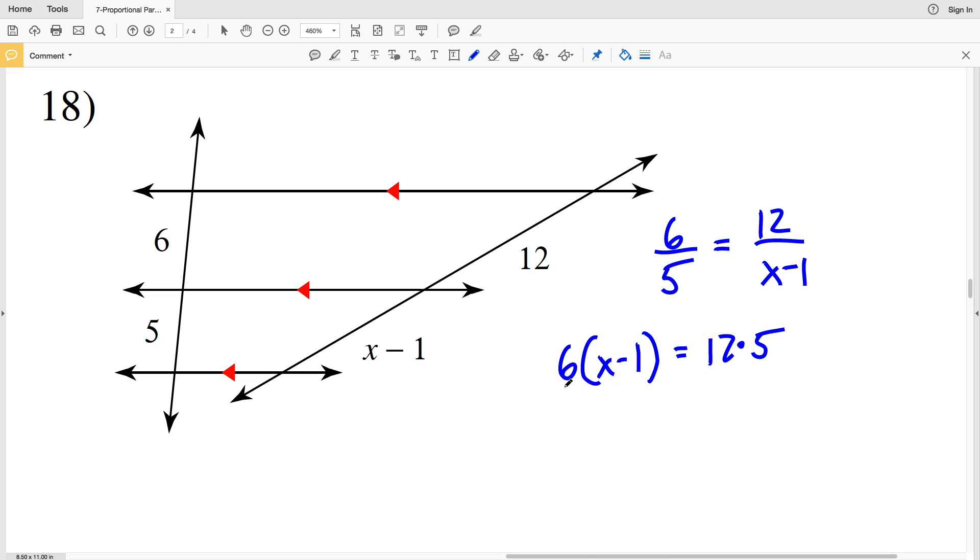When I divide both sides by 6, 12 times 5 is 60 divided by 6, which is 10. So I'll have x minus 1 equal to 10. And when I add 1 to both sides, I'll get X all by itself, and 10 plus 1 equals 11. So 11 is my final solution.